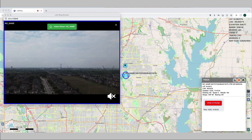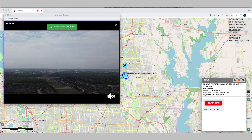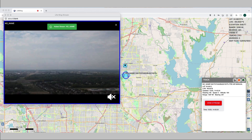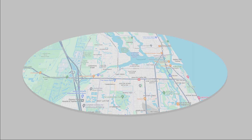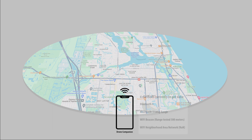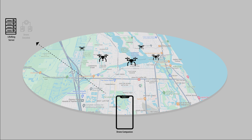Introducing our Drone Companion Android application. Drone Companion enables us to detect and display drone traffic into the LifeRing COP. Most drones broadcast their remote ID. This will be an FAA requirement next year. Drone Companion detects any drone's remote ID within a certain range and sends that data along with telemetry to the server, where our drone data link will display the track symbols on the LifeRing map.